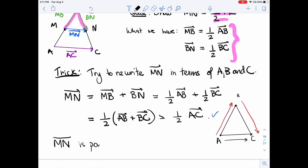So MN as a segment, I'm going to go back to the original question, which is about segments, not vectors. Is parallel, because the vector is, the segment is, is parallel to AC. But we can see what the length is, right? This one is half that one. So half as long. Perfect.